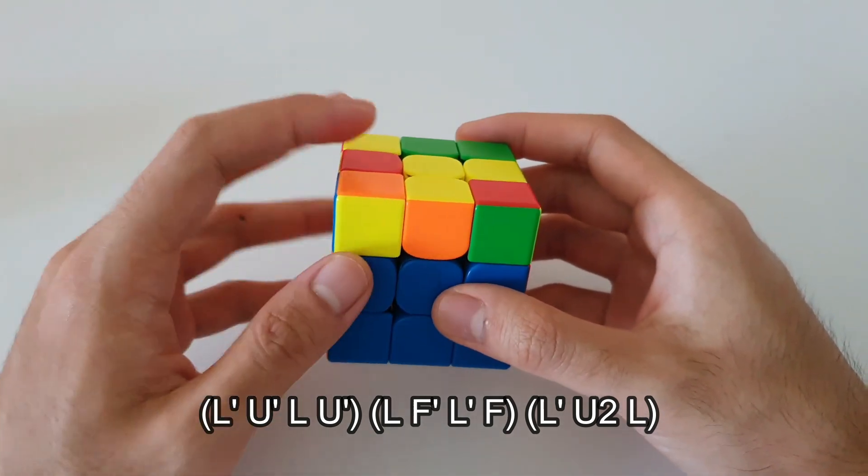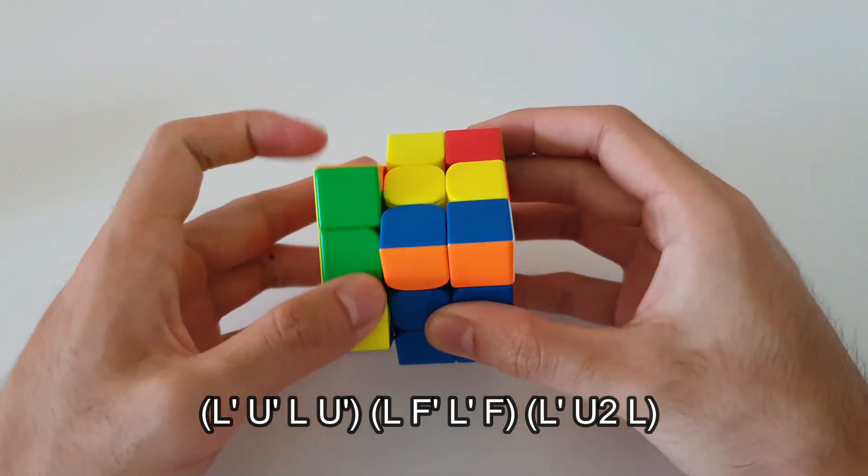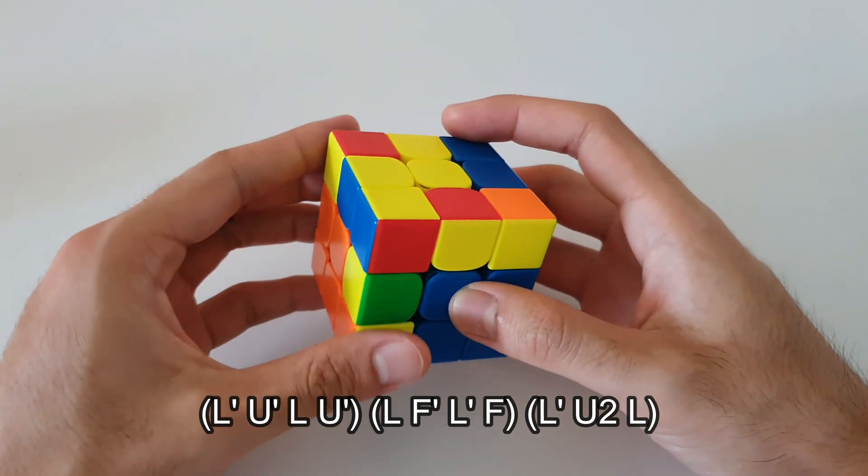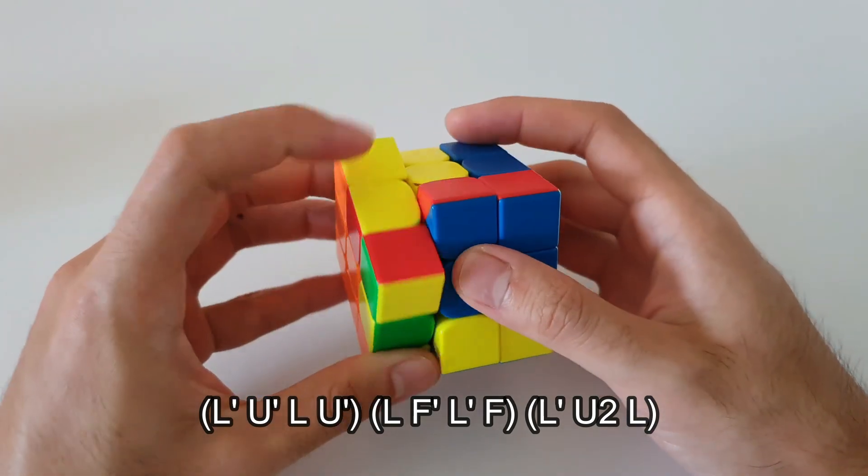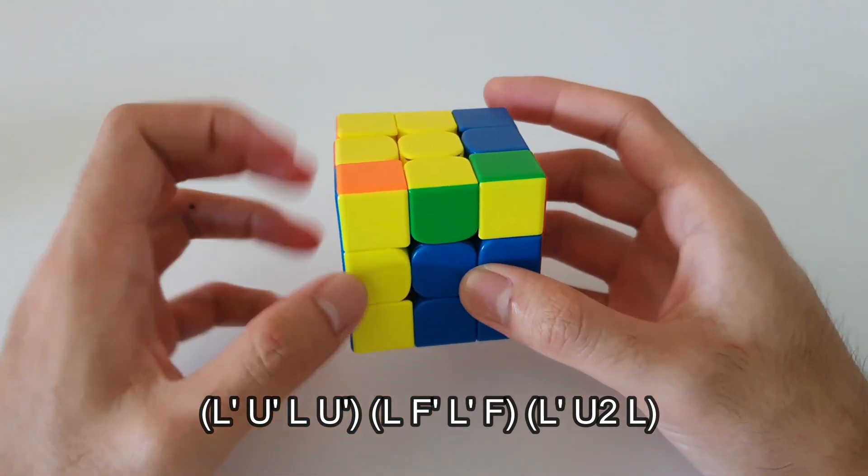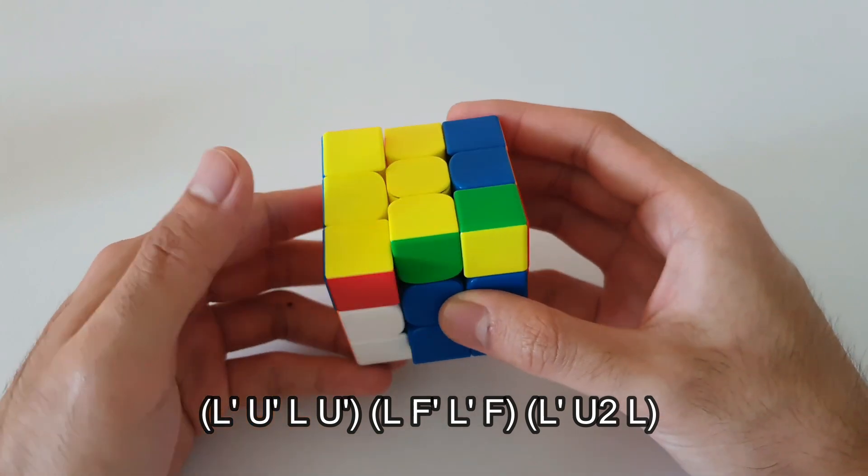So it starts off by once again, moving the F2L pair out, moving it all the way to the back position here, do a lefty sledge. And finally, inserting this F2L pair back into the slot using a U2 insert like this.